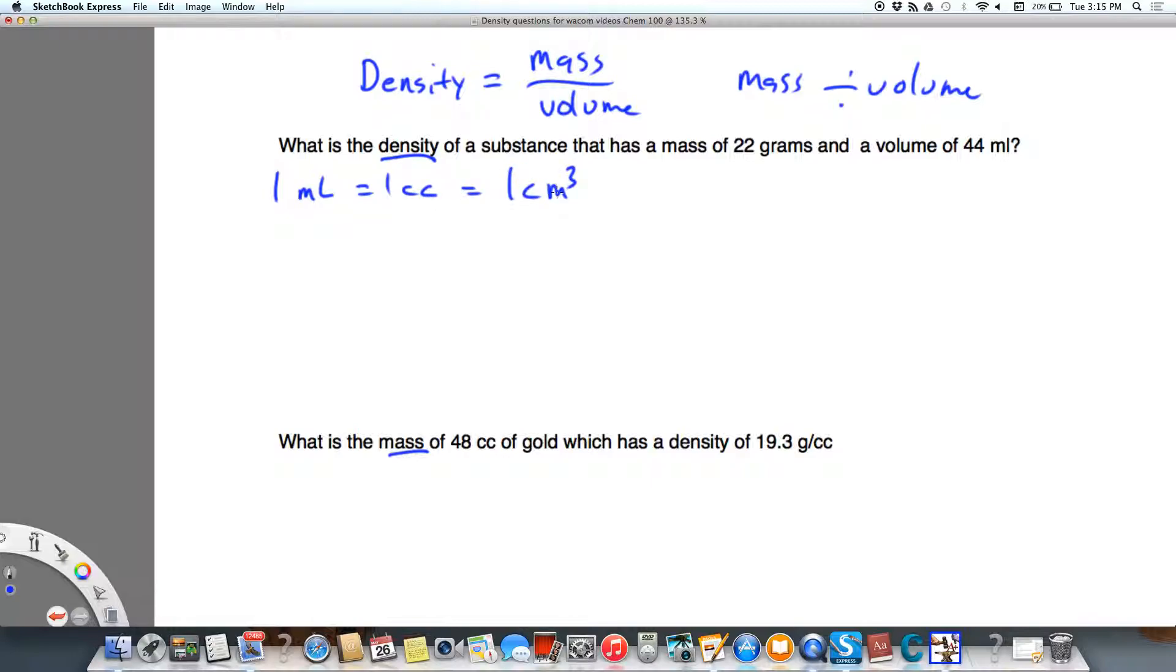We know that density equals mass over volume, and mass is 22 grams, and volume is 44 milliliters. Simple as that. And when I do the division, I come out with 0.50 grams per milliliter. That's the same as saying 0.50 grams over 1 milliliter.